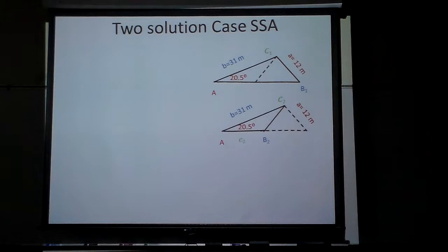Okay, the two solution case. Here's what's going to happen here. I don't know whether it's this triangle like this or like this. This 12 could go like that or it could go backwards like that. This angle here is 20.5, so I don't know and this side is 31.